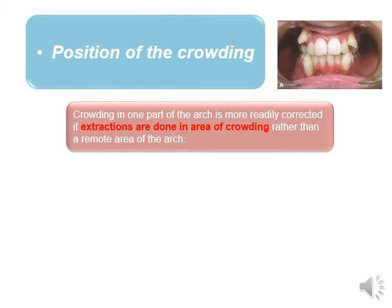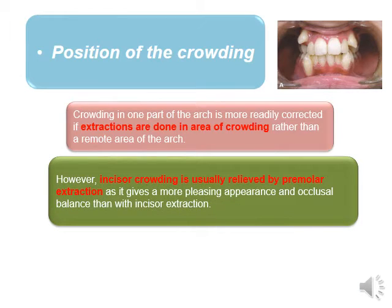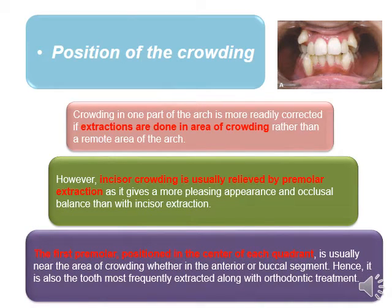Position of crowding: crowding in one part of the arch is more readily corrected if extractions are done in the area of crowding. However, incisor crowding is usually relieved by premolar extraction as it gives a more pleasing appearance and occlusal balance. The first premolar, positioned in the center of each quadrant, is usually near the area of crowding whether in the anterior or posterior segment. Hence, it is also the tooth most frequently extracted along with orthodontic treatment.